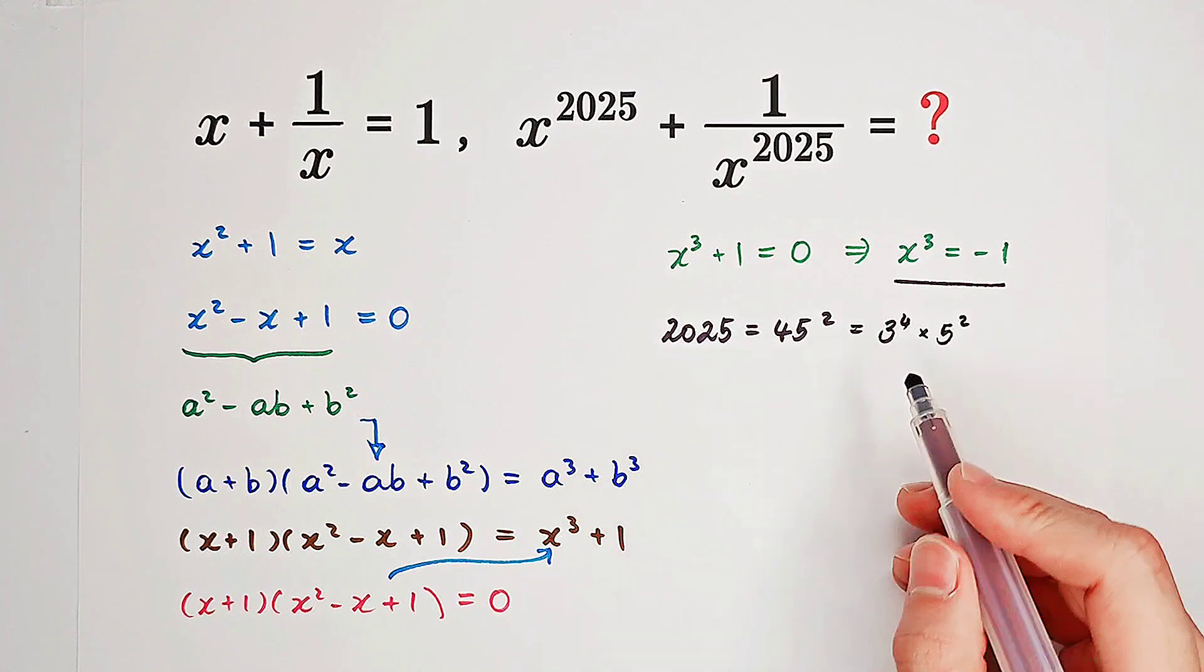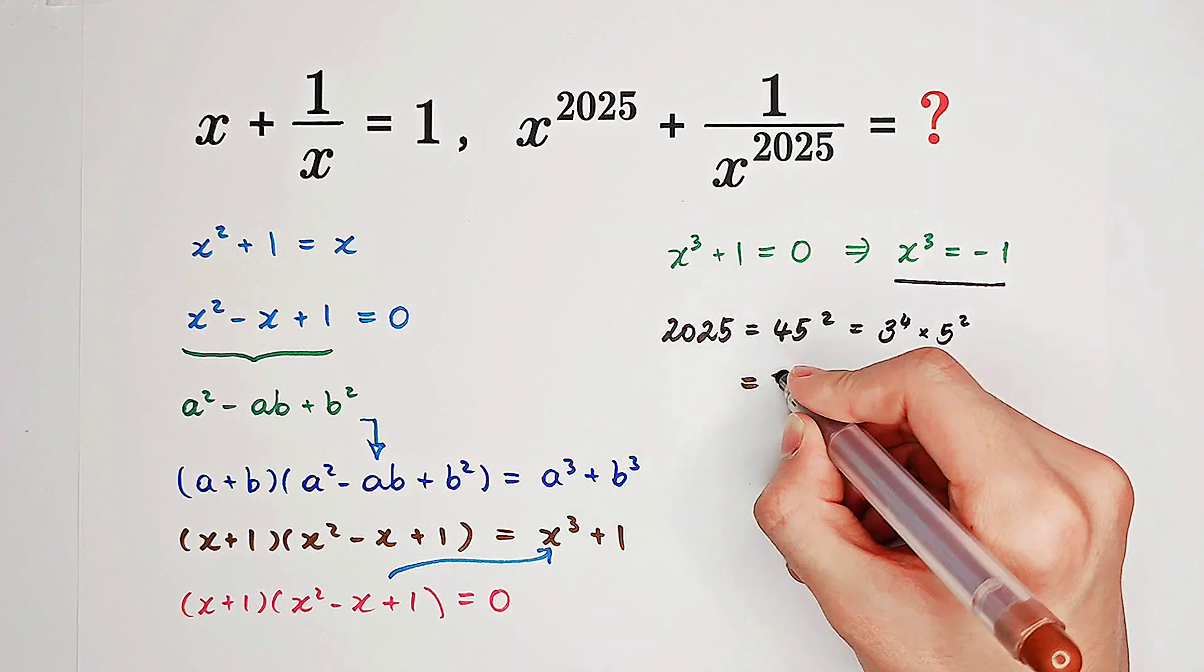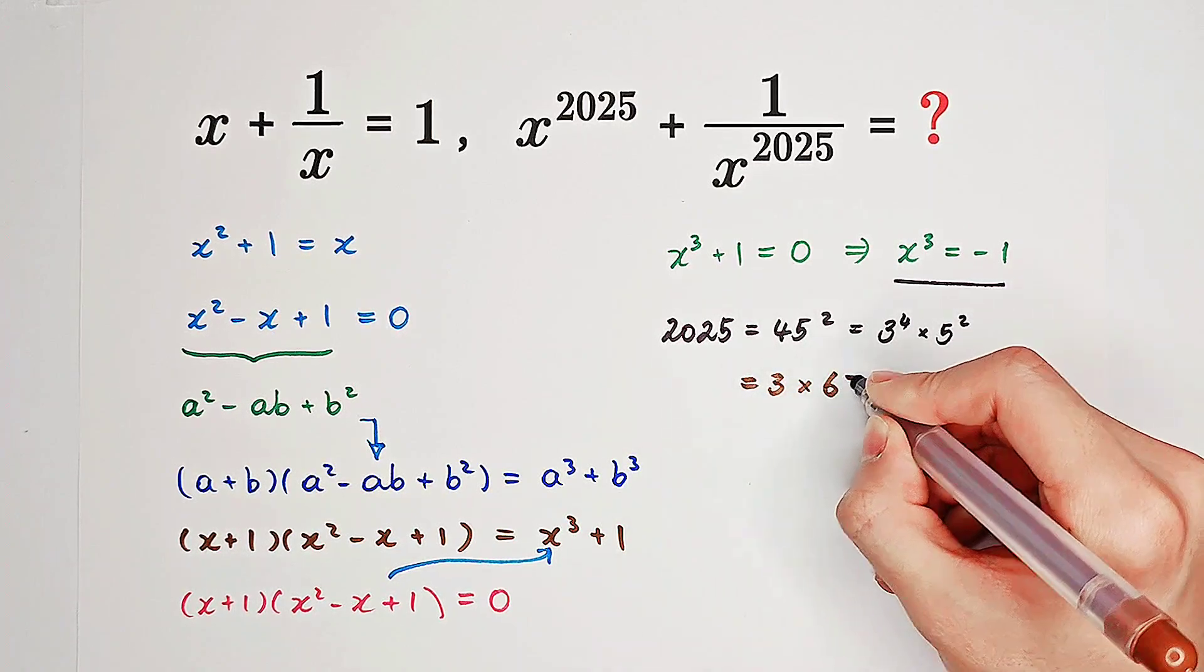So, that means 2025 is divisible by 3. And it is 3 times 675.